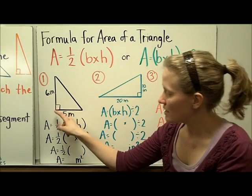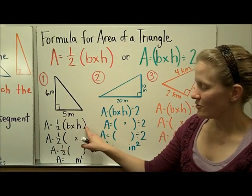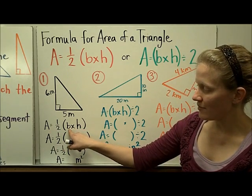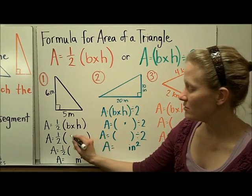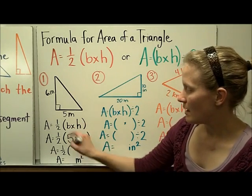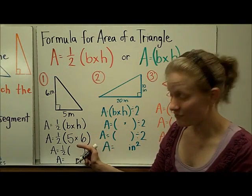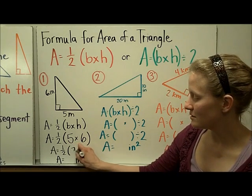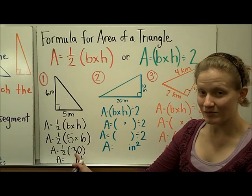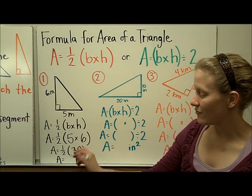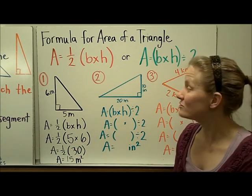Here I have a right triangle with five meters as the base and six meters as the height. I've written my formula, then I'm going to replace the base and height with numbers. The base is five meters and the height is six meters. I'll do what's inside parentheses first. Five times six is 30. Half of 30 is 15. So the area of this triangle is 15 meters squared.